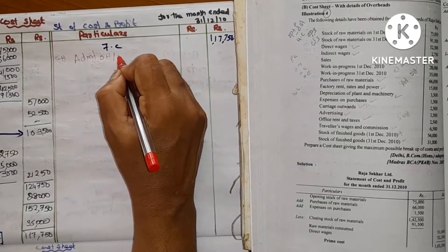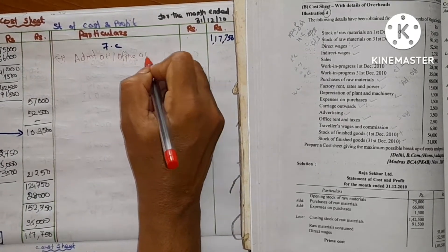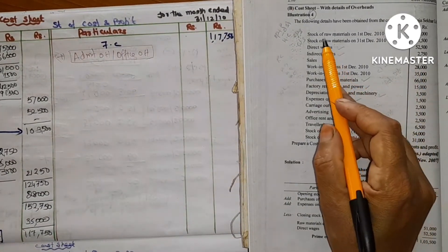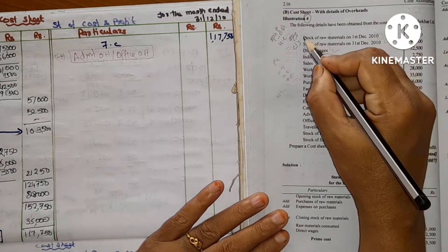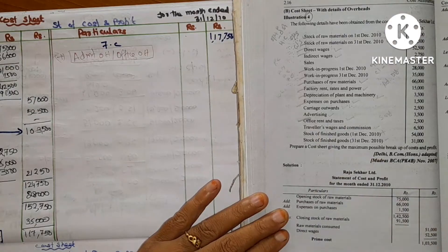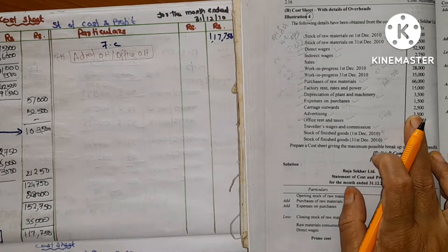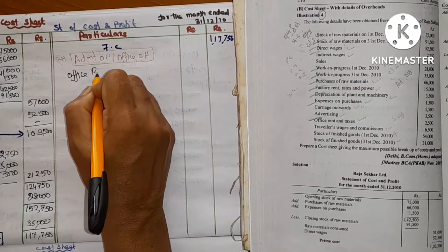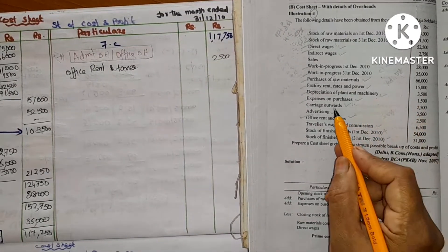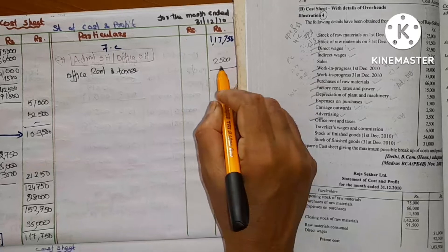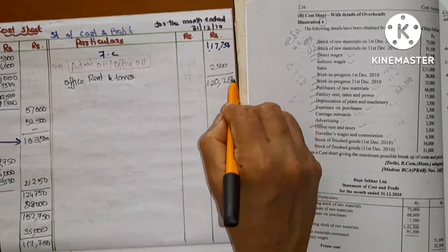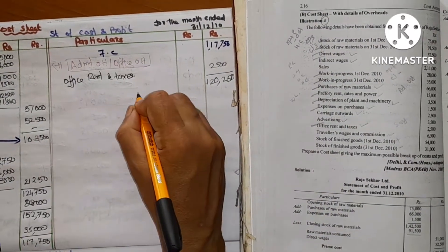Next: administrative or office overhead. Office rent and taxes 2,500. Adding this to factory cost gives 1,20,250, which is the cost of production.